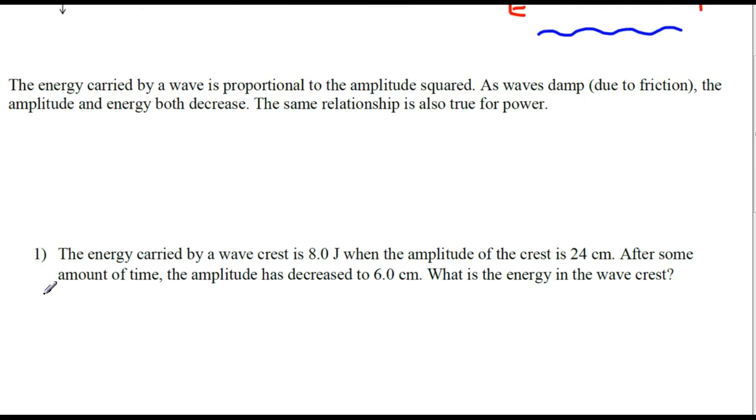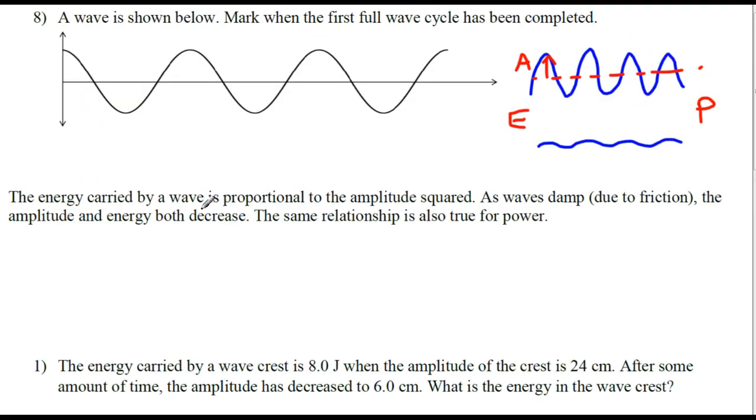So here's the relationship. The energy carried by a wave is proportional to the amplitude squared. Let's write that down. E is proportional to amplitude squared. That means if I divide both sides by A squared and I turn this from a proportionality into an equation, I have this.